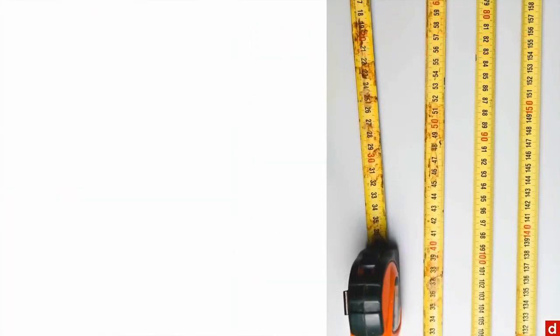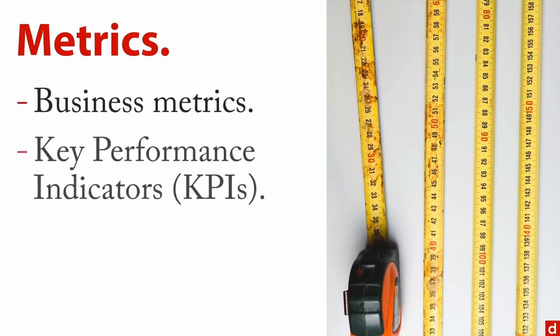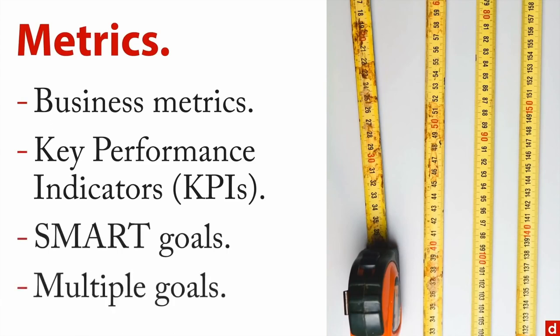Next are specific metrics, or ways of measuring. There are a few different categories here: there are business metrics, there are key performance indicators or KPIs, there are SMART goals — that's an acronym — and there's also the issue of having multiple goals. I'll talk about each of those for just a moment.